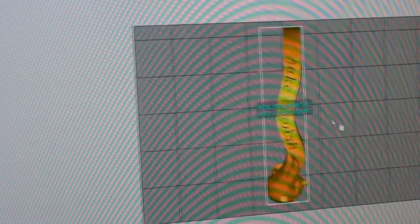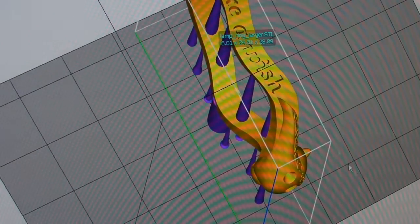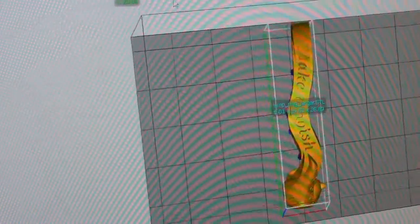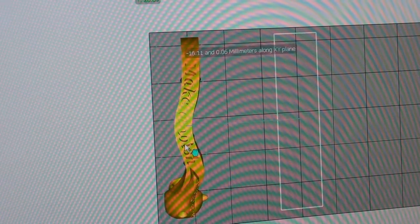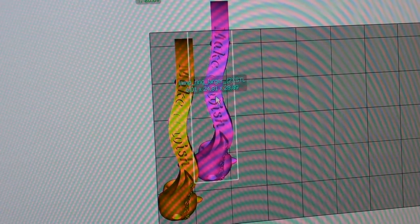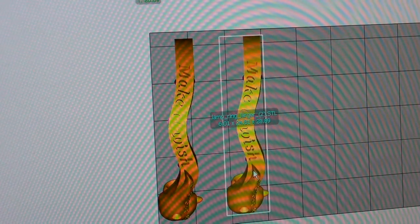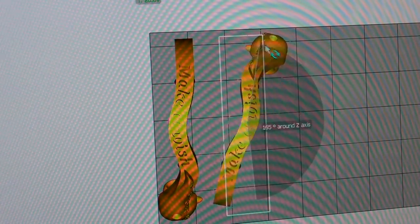The Pico comes with a piece of software called Composer, which lets you create supports for your parts and arrange them for printing. Here we see a ring that I've made which is already set up with supports. I can easily reposition it and create duplicates to fill the build platform. I can usually fit about 6 rings or pendants on the build platform at once.